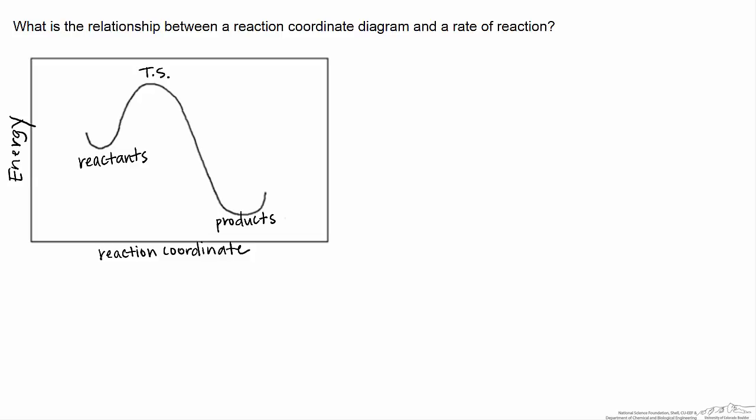This screencast focuses on the relationship between potential energy diagrams of reaction coordinates and reaction kinetics. In courses as early as high school chemistry, we learned to start looking at reactions in terms of potential energy diagrams where we have reactants that have to cross some kind of energy barrier in order to form products.